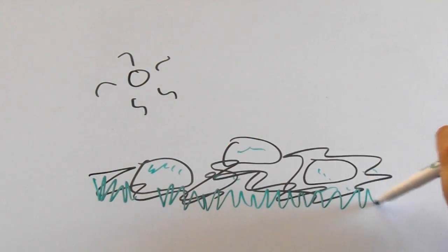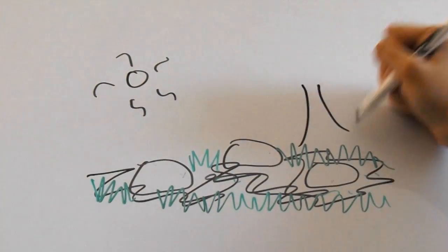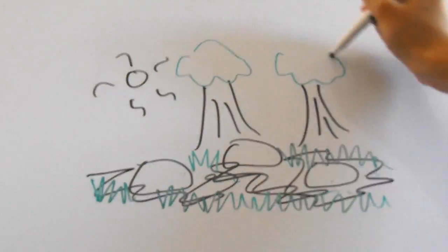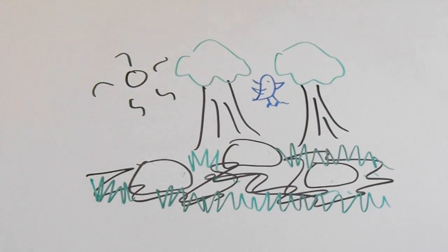Once the soil is here, grasses and shrubs start to take root and take over the pioneer organisms. After a while, trees will take over and a bunch of little or big critters will also come into the area.